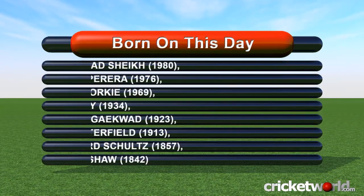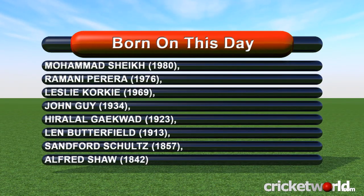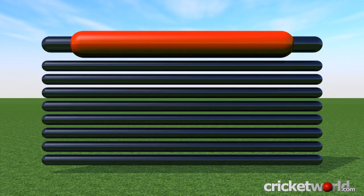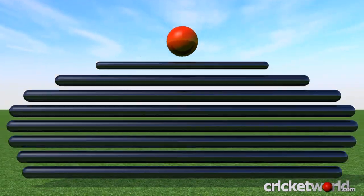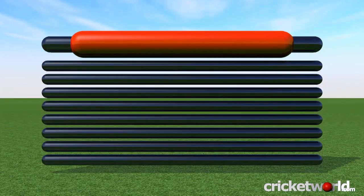Happy birthday to you — it is your birthday today as it is for Mohamed Shaikh, born in 1980. He was a left-hand batsman and slow left-arm bowler for Kenya, playing 7 first-class matches and 21 ODIs, including appearances at the 1999 World Cup.